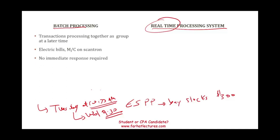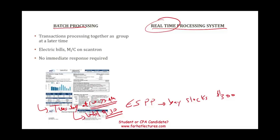In a batch processing system, you don't get an immediate response — you wait until the following day to see what happened, or whatever time the processing occurs. For example, looking at an electric bill, they process all the numbers overnight, and the following day they would find out exactly what the total was.